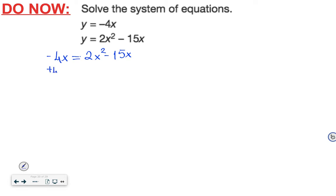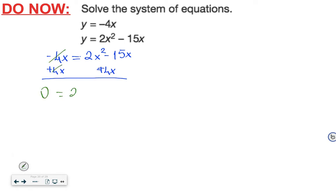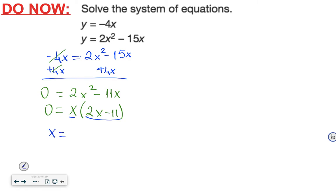If you add 4x to both sides, you get 0 is equal to 2x squared minus 11x. Taking out the greatest common factor x on the right side gives x times (2x minus 11) equals 0. Since the product equals 0, at least one factor must be 0: x equals 0, or 2x minus 11 equals 0.